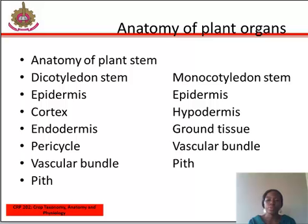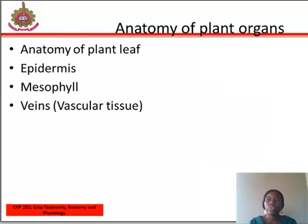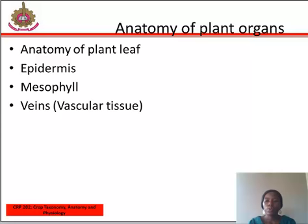Vascular bundles consist of xylem and phloem. Anatomy of plant leaves — the transverse section of the leaf shows three regions: the epidermis, the mesophyll, and the veins (vascular bundles). 1. The epidermis is a continuous layer of cells on all surfaces of the leaf. 2. The mesophyll forms the bulk of most leaves, and the chloroplasts in its cells are the principal site of photosynthesis. The mesophyll is differentiated into palisade mesophyll — layers of cells present below the upper epidermis that play a vital role in photosynthesis, consisting of closely packed columnar cells with their long axis at right angles to the leaf surface.